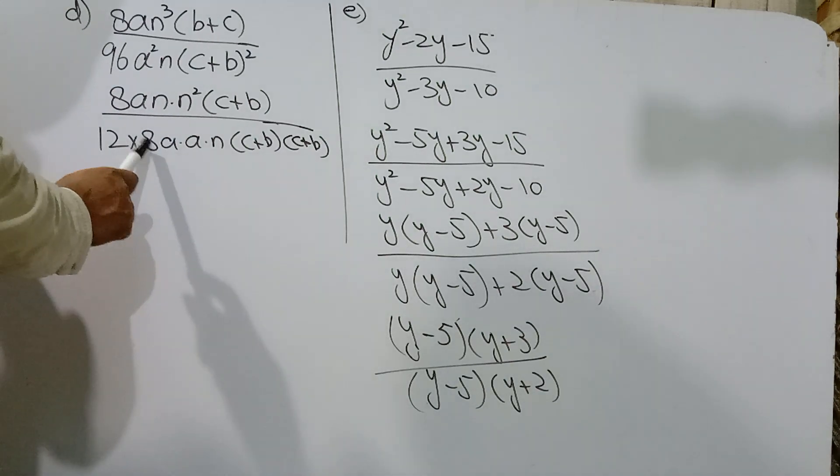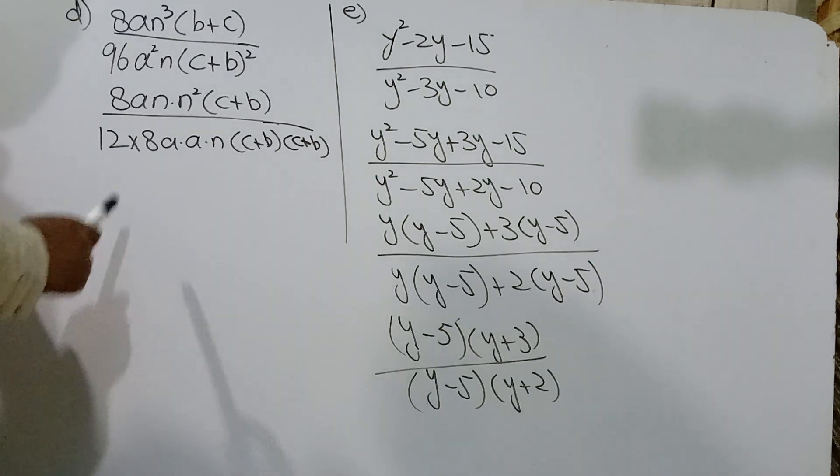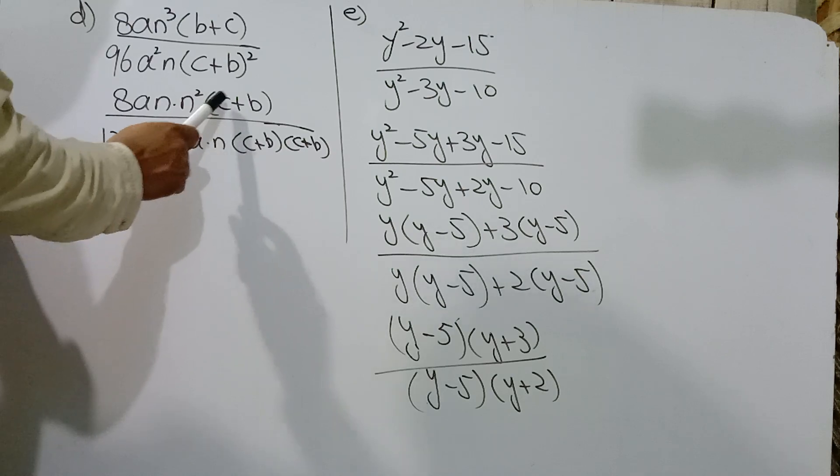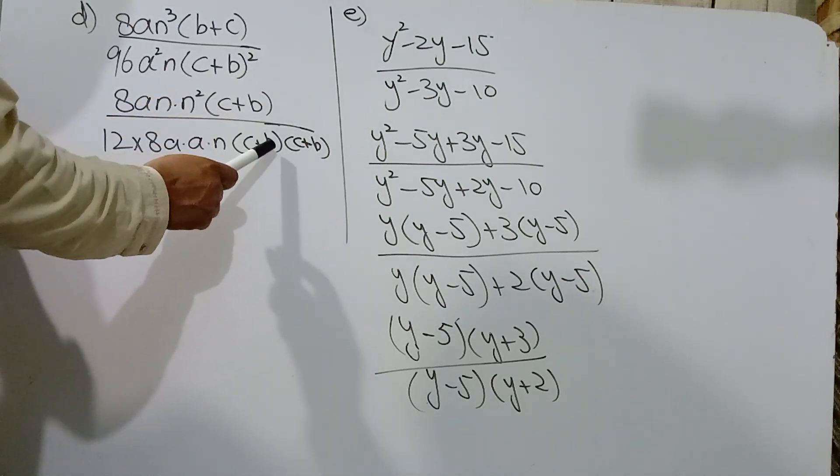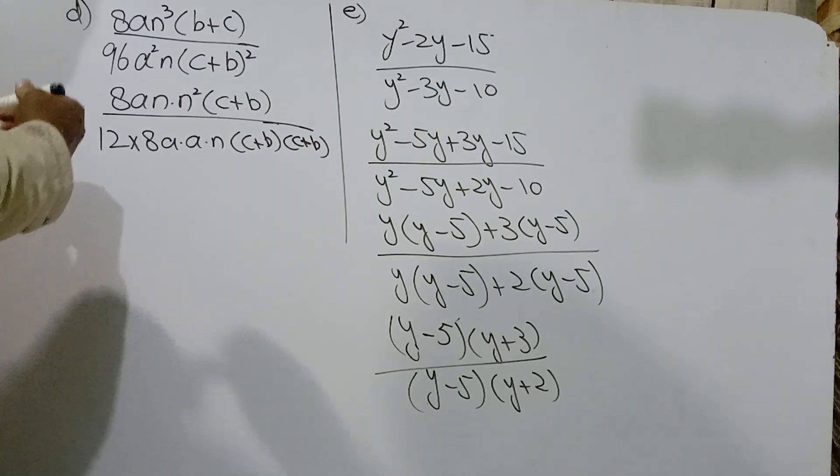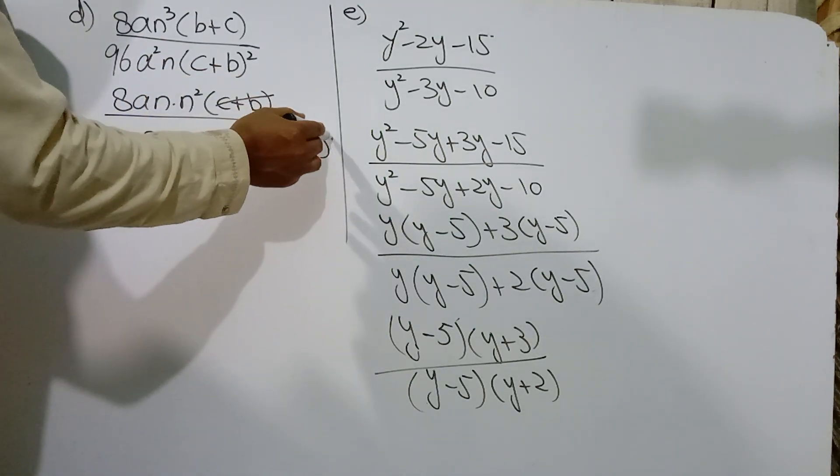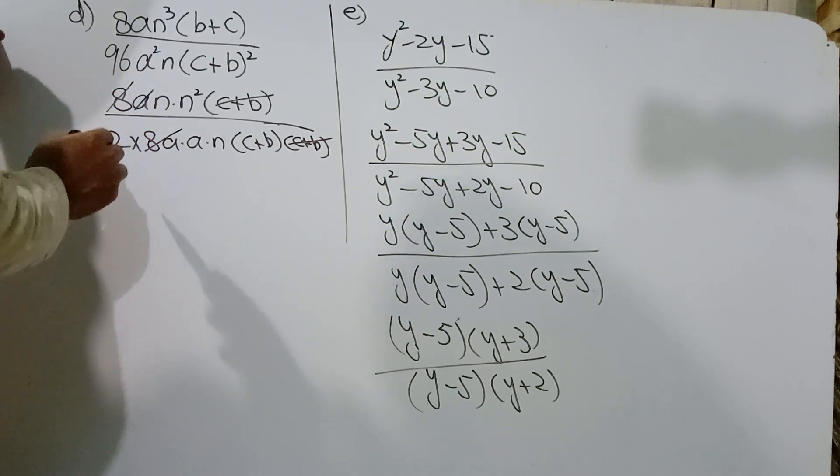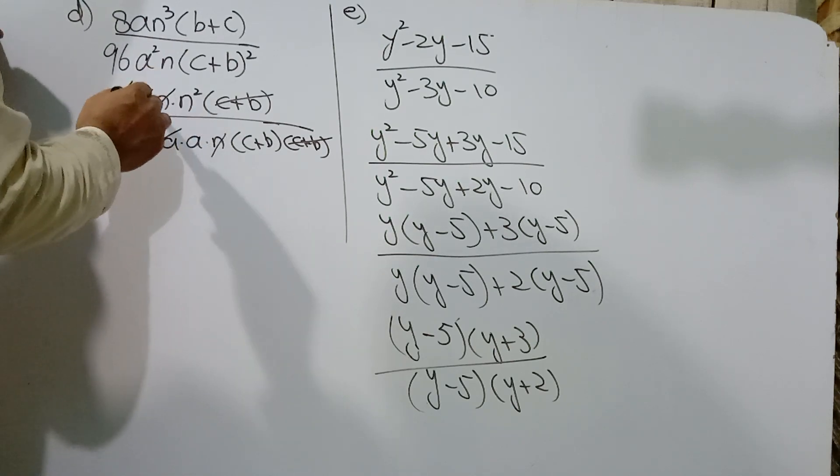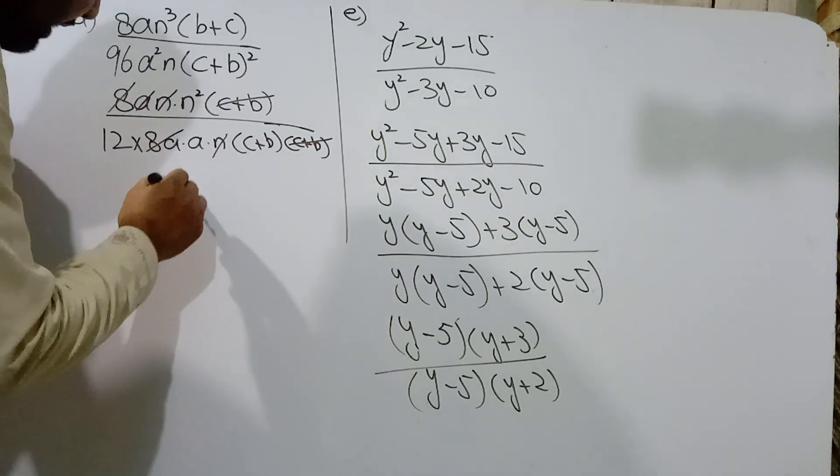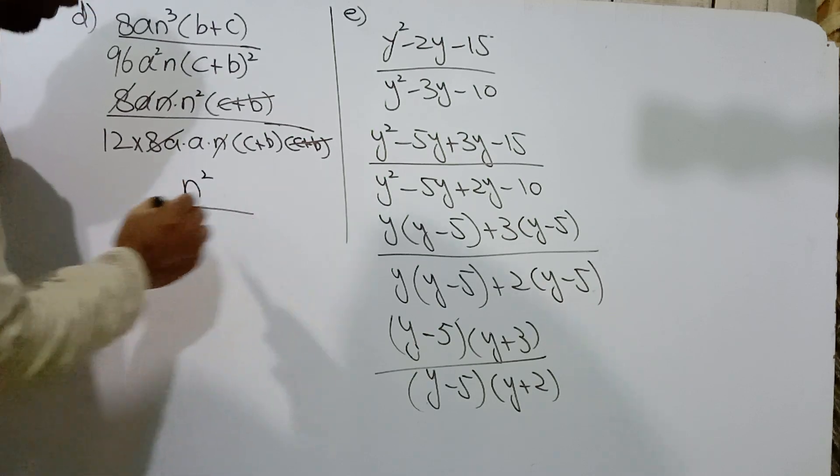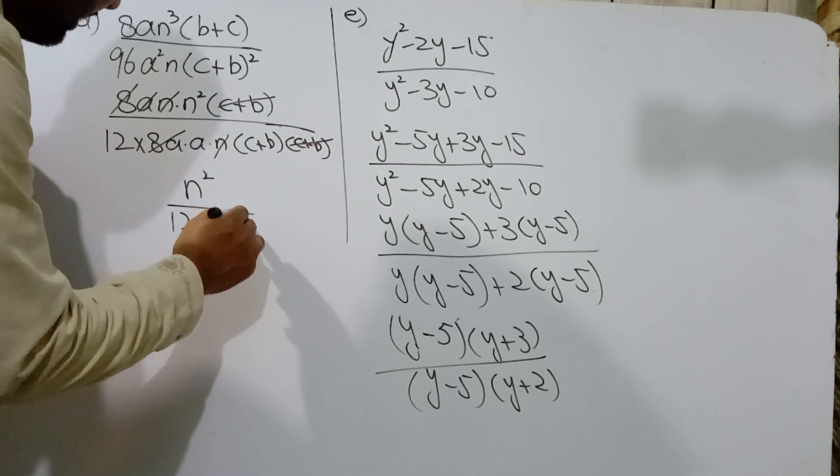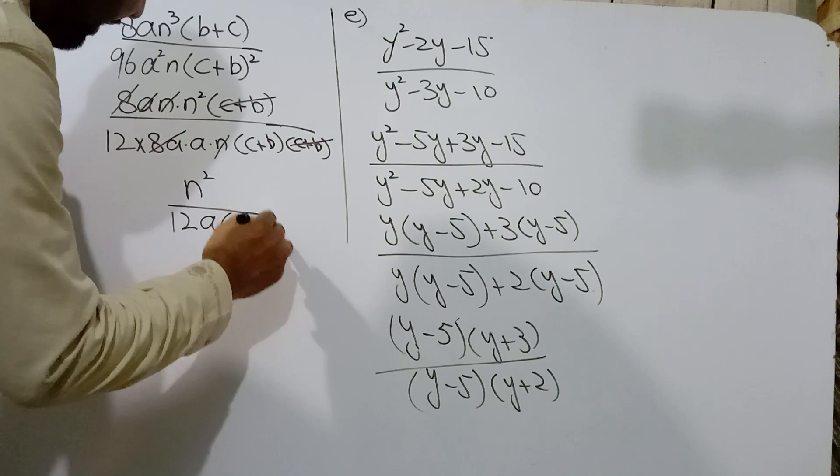12a is 96. a² and an(c+b)². We can write 2 times. Now this c+b and c+b cut. 8a and 8a cut. This n and this n cut. Remaining is only n² denominator. Denominator is 12, this a and c+b. This is the answer.